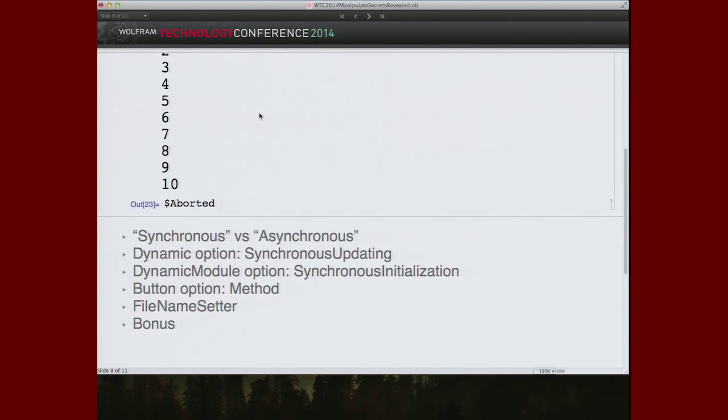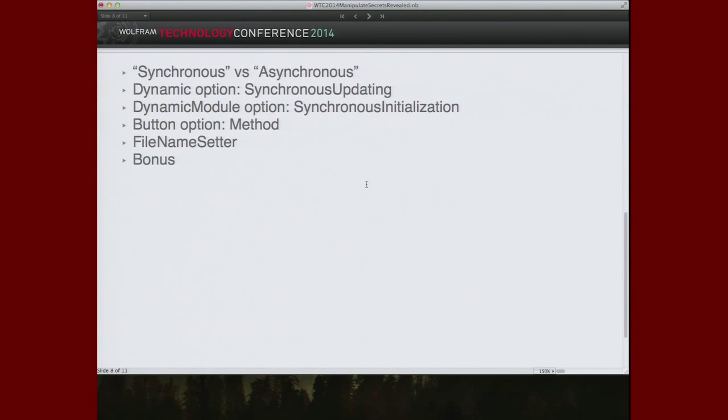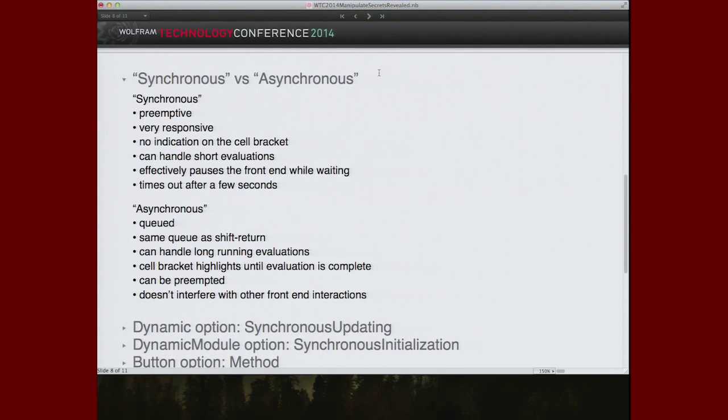There are two main ways in which the front end and kernel communicate with one another. For purposes of this talk, I'll call them synchronous and asynchronous. Synchronous updating is the new thing we invented in version 6 that allows this sort of fast updating while the kernel is otherwise busy. We have the ability to do preemptive evaluations. The kernel is busy, but you can still ask it to do something. These evaluations are intended to be very fast. They're expected to be very fast. The front end has things, has nice, has ways of making them even smoother by hiding all of the additional bells and whistles that you usually associate with evaluations, like cell brackets highlighting, running appearing in the title. None of that happens for preemptive evaluations.